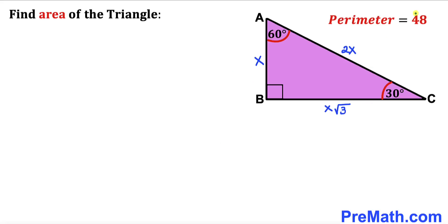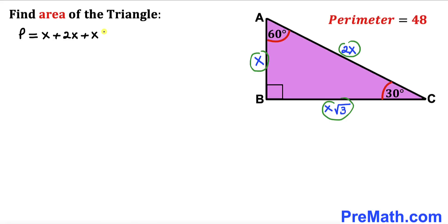We know the perimeter of triangle ABC has been given to us as 48. The perimeter is the sum of all three sides. So the perimeter p equals x plus 2x plus x times square root of three. Simplifying by combining like terms, that gives us 3x plus x times square root of three.